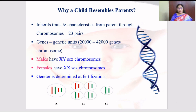Children resemble their parents because they inherit traits and characteristics through chromosomes. Each human being has 23 pairs of chromosomes, and each chromosome contains 20,000 to 42,000 genes. Genes are the basic units that transfer traits from parents to children. Males have XY chromosomes and females have XX chromosomes, and gender is determined by these chromosomes.